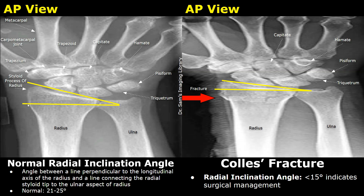An angle called the radial inclination angle is used to assess the radius and is also helpful in the management of Collis fractures — it can help determine whether surgery is required. It is the angle between a line perpendicular to the longitudinal axis of the radius and a line connecting the radial styloid tip to the ulnar aspect of the radius. Normally this angle is between 21 and 25 degrees. In a Collis fracture this angle gets reduced, and if it's below 15 degrees, surgical management is recommended.